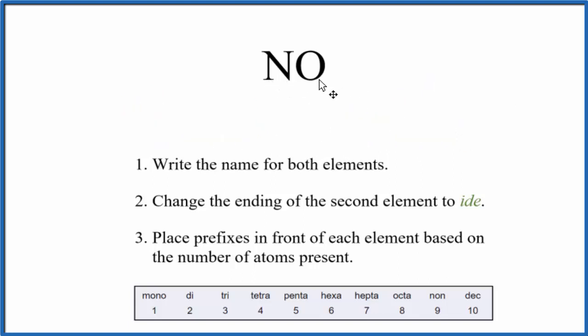Because nitrogen and oxygen, they're both nonmetals, we have a molecular compound. We could also name it using these rules for molecular compounds. So we'd write the name of both elements.